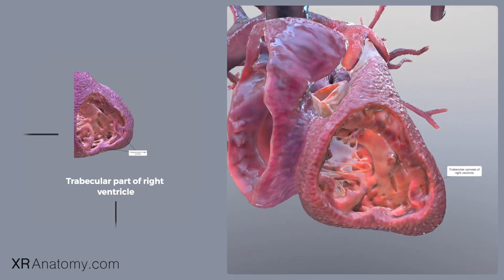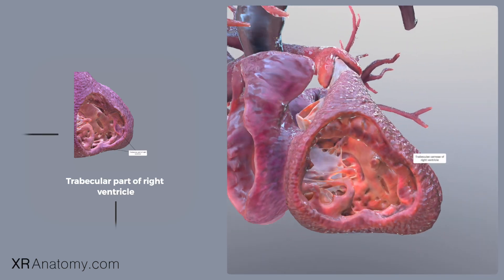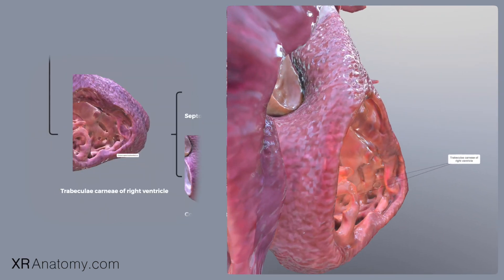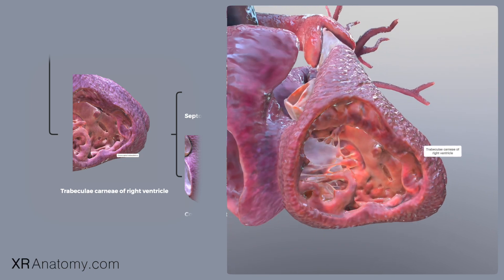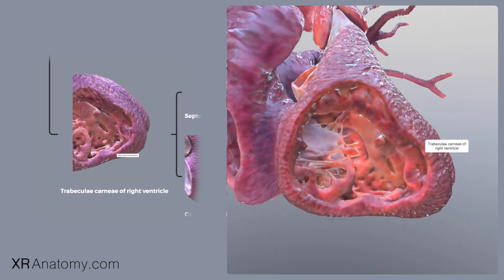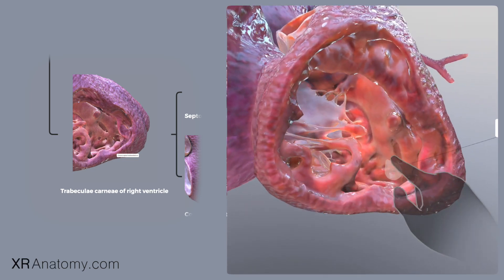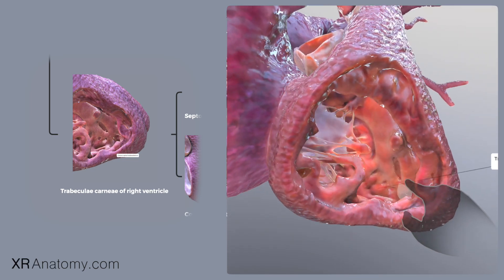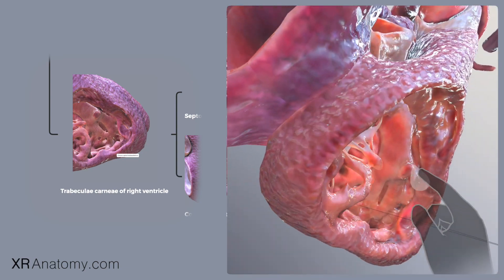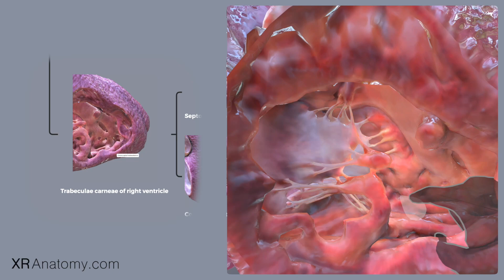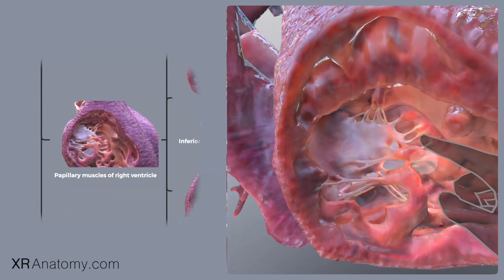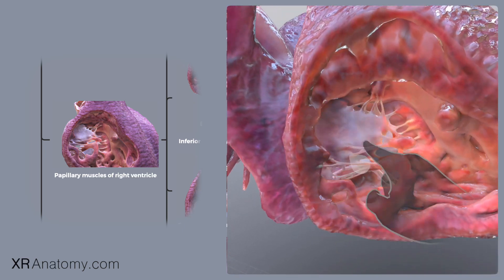Trabeculations might vary in form. The trabecular part extends to the heart's apex, and its thin walls are reinforced with muscle bands known as trabeculations. Some trabeculations are anchored along the ventricular walls, forming pronounced ridges. Others stretch across, creating arch-like bridges, while certain projections are connected at one end to the ventricular surface and at the other to the tricuspid valve.